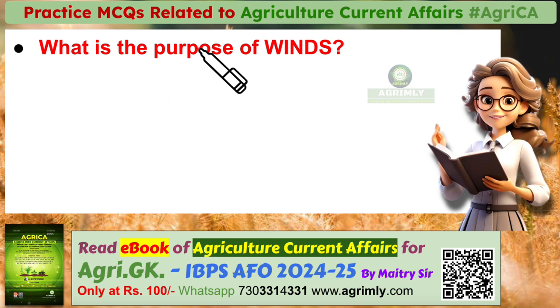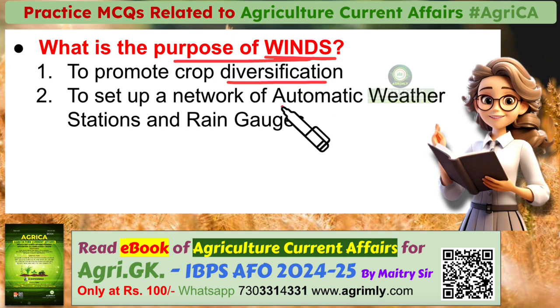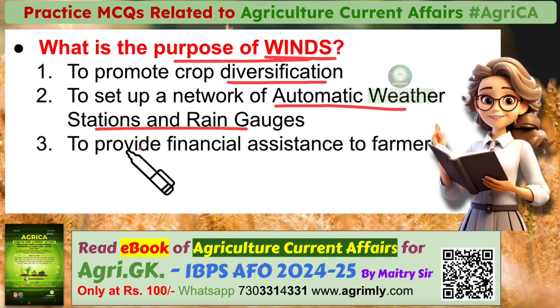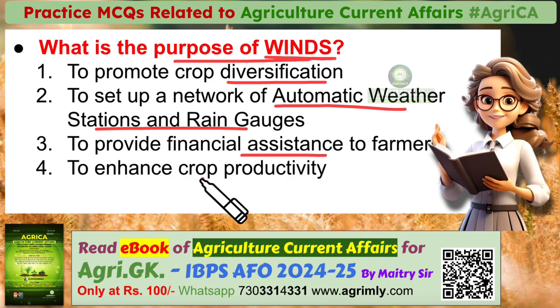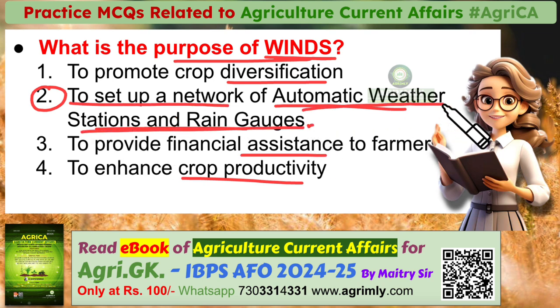Question three: What is the purpose of the Weather Information Network Data System (WINDS)? Options: to promote crop diversification; to set up a network of automatic weather stations and rain gauges; to provide financial assistance to farmers; or to enhance crop productivity. The correct answer is: to set up a network of automatic weather stations and rain gauges. WINDS aims to establish this network to collect accurate weather data, which is crucial for agricultural planning and risk management.